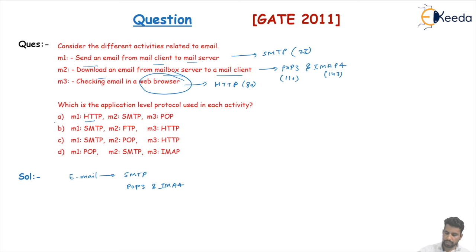First one is m1 HTTP - no, this is incorrect. Second is m1 SMTP, yes; m2 FTP - no, FTP is not in the picture here. We are talking about email. Option C is saying first is SMTP, second is POP, and third is HTTP. Yes, this is the correct option. Option number C, your correct answer is option number C.